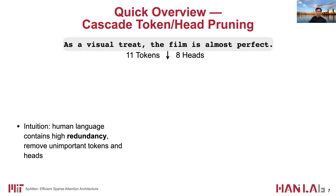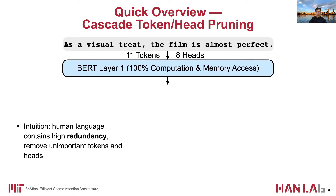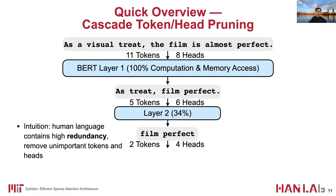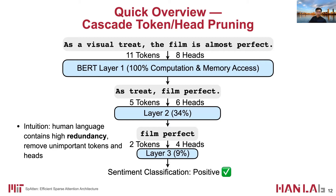Here we show an example. The task is to classify whether a film review is positive or negative. The input to the first BERT layer contains all 11 tokens and 8 heads. After the first layer, we identify unimportant tokens and heads and remove them. The second layer only needs to process a shorter sentence with fewer heads. Similarly, more non-essential heads and tokens are removed, and the last layer only has two tokens and four heads. If I only show you these two words, are we able to determine whether it is positive? I believe you can — that's the idea of removing redundancy.